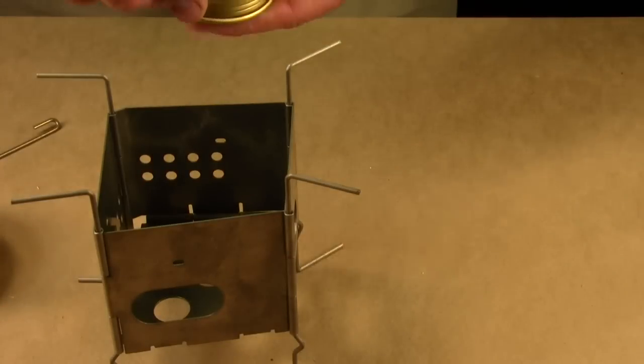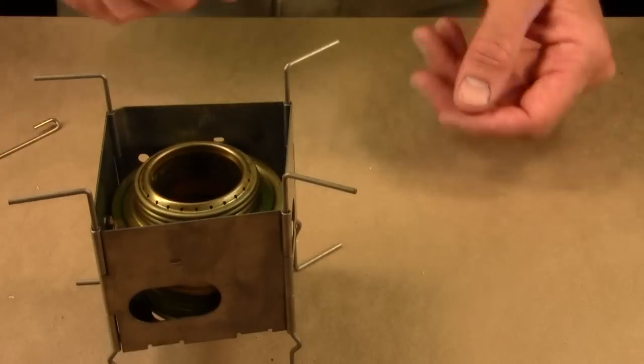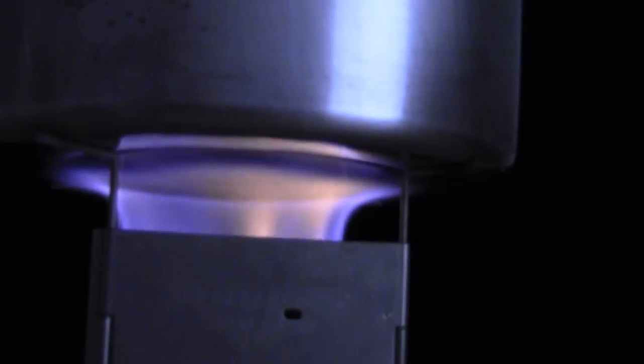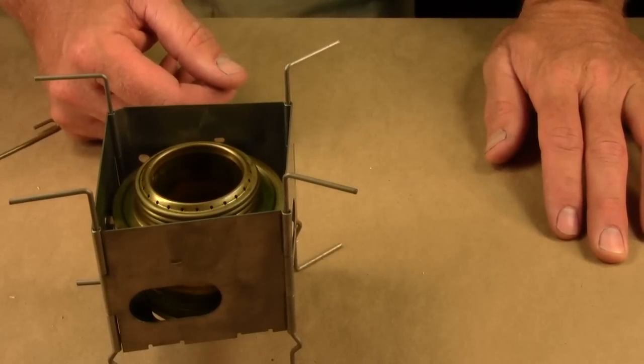You can also put your cap down in the bottom and then put your Trangia down in. This is the Trangia placed in the medium height position. And that's your medium temperature position.